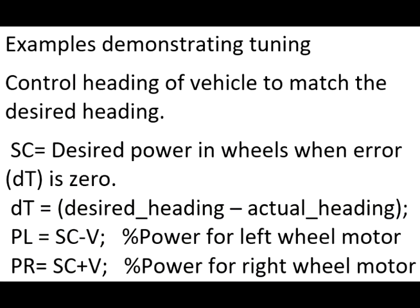How do we tune the robot system to be appropriate for our robot? First, we need to write equations that use V to move the robot toward the desired position, where V is minimum when the robot is at the desired position. And of course, V is minimum when the error dT is equal to zero.